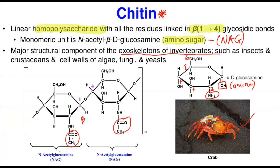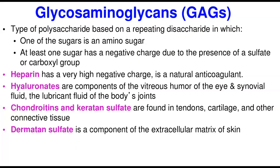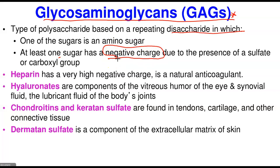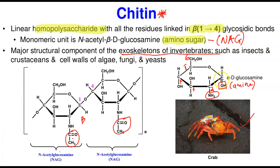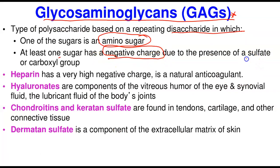Now we'll talk about heteropolysaccharides — those made up of different repeating units of monosaccharides. The first class is glycosaminoglycans, or GAGs. These are a type of polysaccharide based on repeating disaccharide units in which at least one sugar has a negative charge due to the presence of a sulfate or carboxyl group, and the other sugar is an amino sugar. So one sugar is an amino sugar and the other must carry a negative charge.